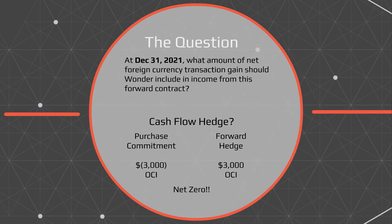If it's a cash flow hedge, the purchase commitment loss of $3,000 shows up in other comprehensive income, not on the income statement. The same is true for the gain from the forward hedge — that also shows up in OCI. So again, it's a net zero for the income statement. The amount of net foreign currency transaction gain will be zero in income from this forward contract.